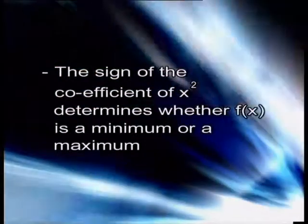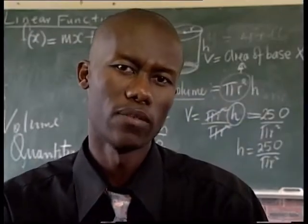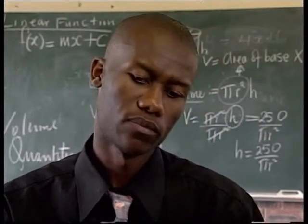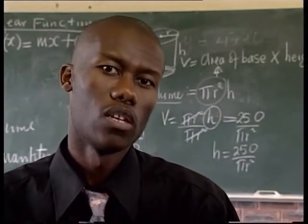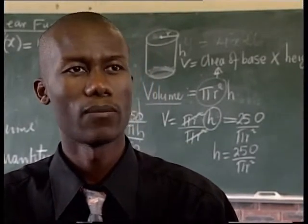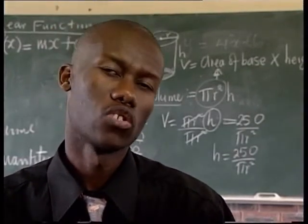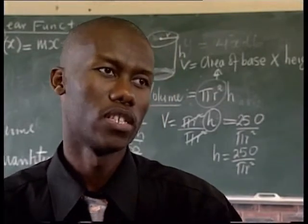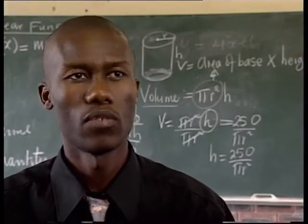The sign of the coefficient of x² determines whether f'(x) gives a minimum or a maximum. I think in calculus the difficult part is learners don't understand why we derive the function. After deriving the function, what's next? We should emphasize that we derive in order to see the maximum or the minimum turning point of a function.